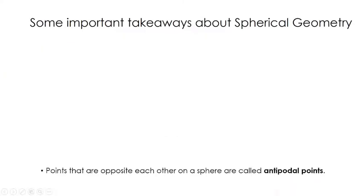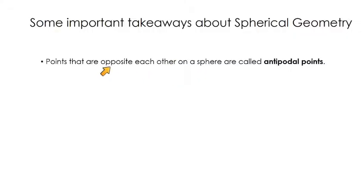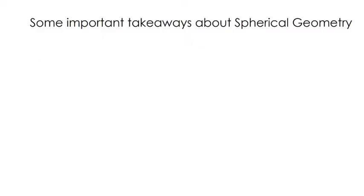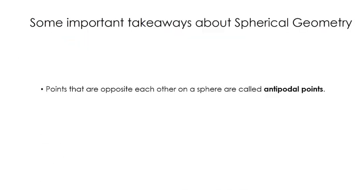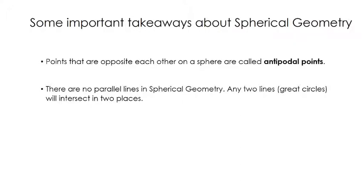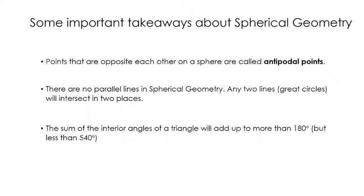A couple of things to remember: points that are opposite each other on a sphere are called antipodal points — a good example would be the North Pole and the South Pole. Key takeaways: there are no parallel lines in spherical geometry; any two great circles will intersect in two places; and the sum of the interior angles of a triangle adds up to more than 180 degrees in spherical geometry. I hope you found this interesting — if you visualize all these figures on the surface of a sphere, you'll do just fine.